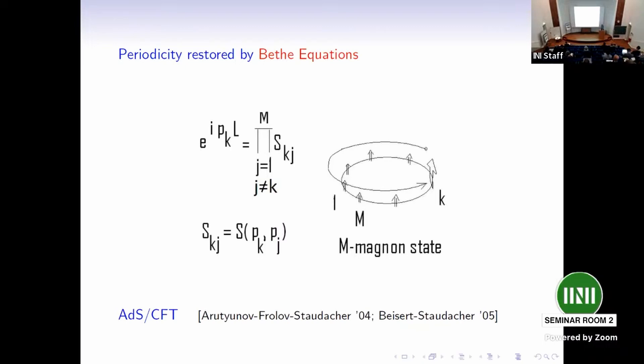Once you impose these M equations, you see one for each magnon, then you have effectively the quantization of momenta. To understand this, imagine that the S matrix is identity, so no interaction at all. Then this is just e to the iPKL equal one, which is the usual quantization of momenta on a circle. Otherwise, if there is interaction, I get this corrective term, and these become M algebraic equations which I have to solve, and there's various techniques to solve. But in principle, you've reduced the problem, which is a very complicated dynamical problem of diagonalizing the dilatation operator, to a set of algebraic equations which you can put on a computer.